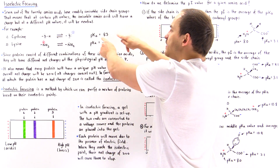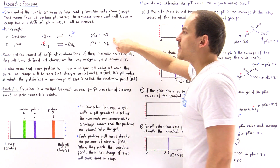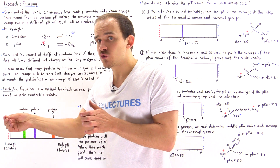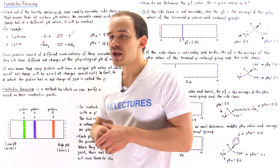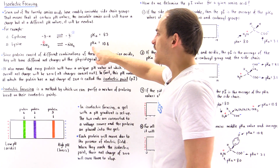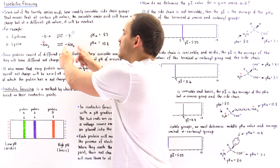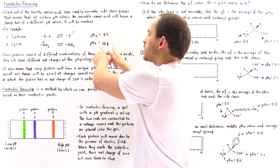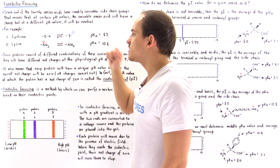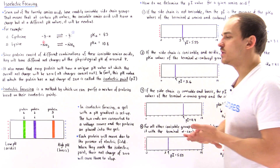If we go above pH 8.3, the negatively charged form will predominate. If we go below 8.3, the neutral form will predominate. For lysine, the ionizable end of the side chain has a pKa of 10.8. At that pH, half will exist in each form. Below pH 10.8, the positively charged form predominates; above 10.8, the neutral form predominates. The same principle is true for the other five readily ionizable amino acids.